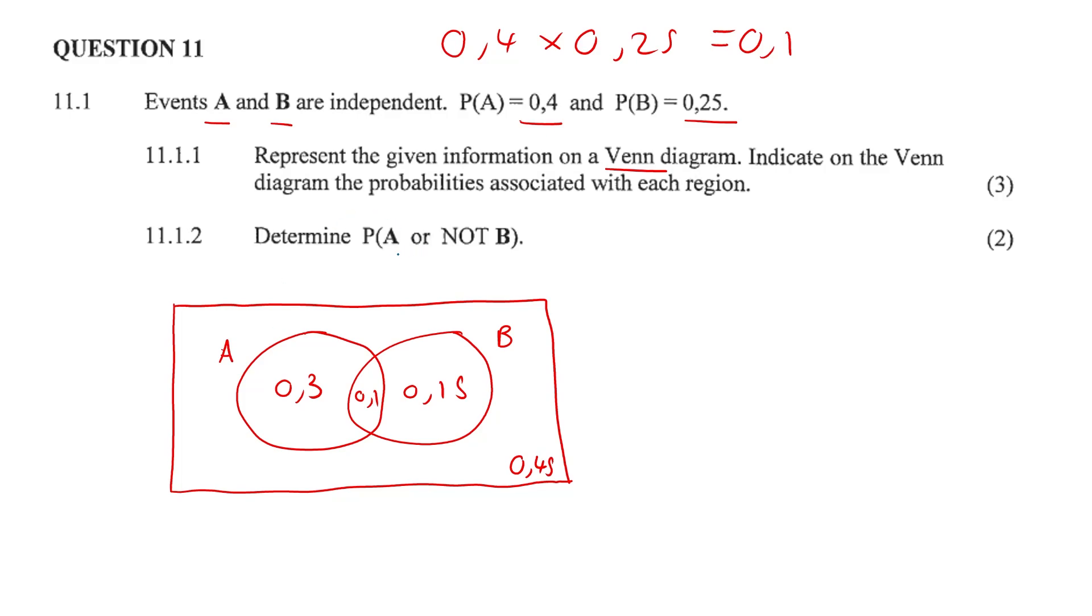Determine the probability of A occurring and not B. Well, from the Venn diagram alone we can see that the probability of A occurring could be the 0.3, the 0.1, or the 0.45. So we simply add all three figures together.